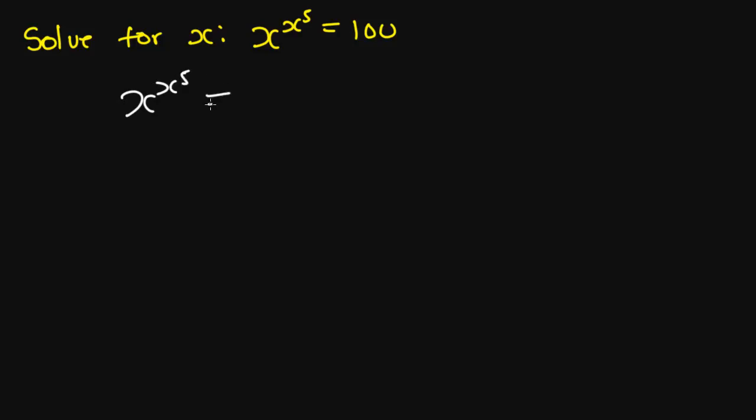Now we are given x to the power x to the power 5 is equal to 100. So we are going to start by raising both sides to the power 5.